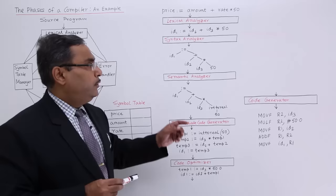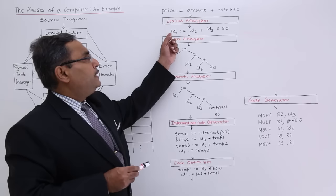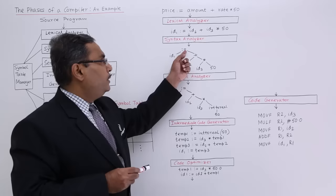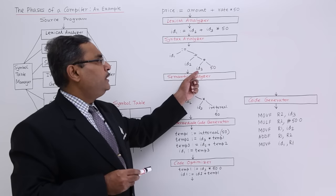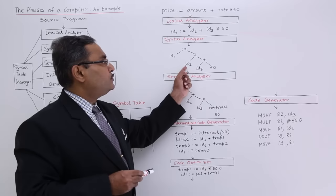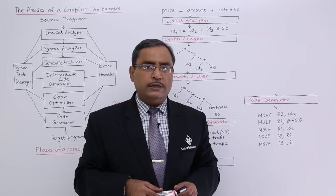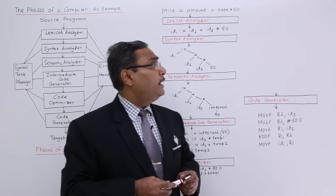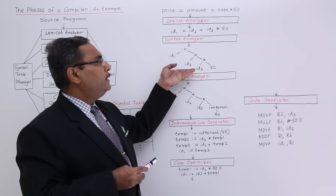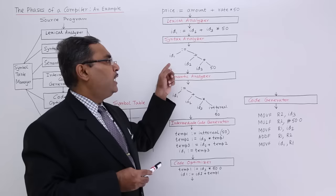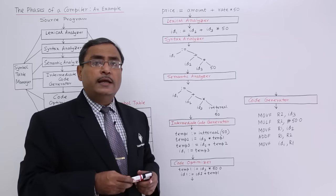The parse tree is constructed as follows: the left-hand side has the assignment operator := with id1 on the left and the right-hand side containing id2 + id3 * 50. Parse trees can be constructed using a top-down or bottom-up approach. If the parse tree construction completes successfully, that means this particular statement is syntax error free. Otherwise, it will produce a syntax error.